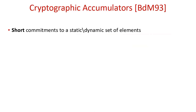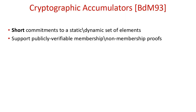Let's start by quickly reviewing the notion of a cryptographic accumulator. An accumulator is a fundamental cryptographic primitive that produces a short commitment to a set of elements. The set may be static, in the sense that all elements are known ahead of time, or dynamic, in the sense that elements may be added or removed at any point in time. The property that distinguishes accumulators from standard short commitments is their support for publicly verifiable proofs of membership with respect to the accumulated set, and sometimes even proofs of non-membership.